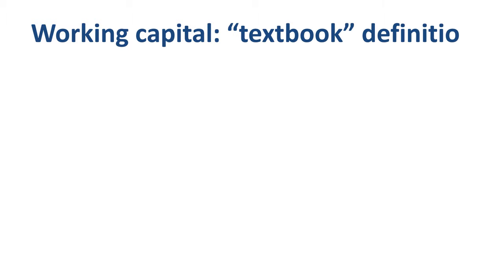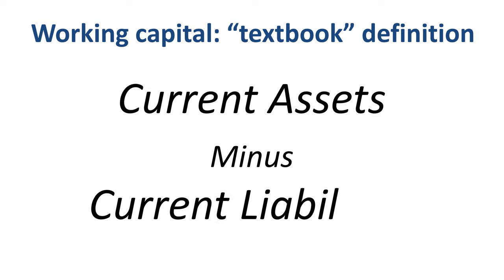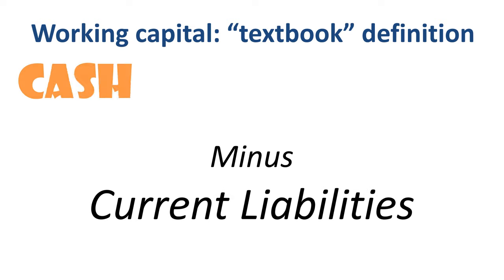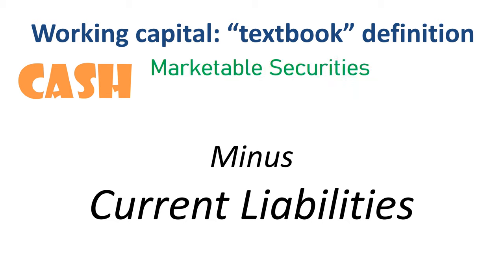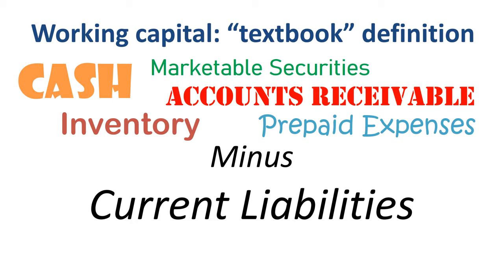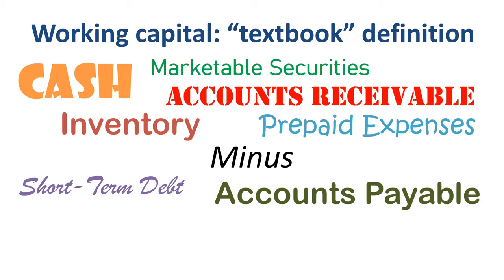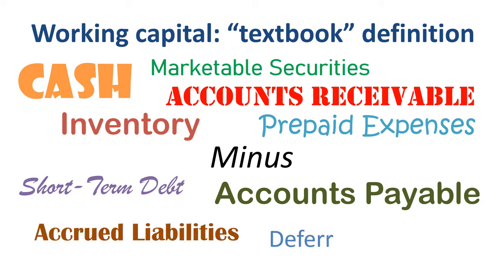Working capital tends to get defined in textbooks as the current assets on a company's balance sheet, minus its current liabilities. Current assets include items such as cash, marketable securities, accounts receivable, inventory, and prepaid expenses. Current liabilities include items such as short-term debt, accounts payable, accrued liabilities, and deferred revenue. Yes, that is a lot of financial terms on one page.